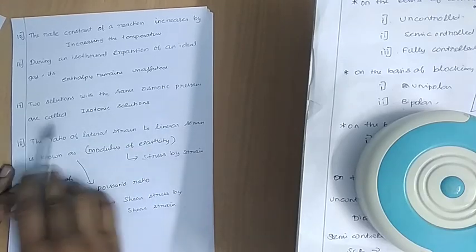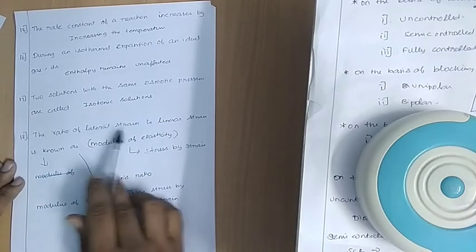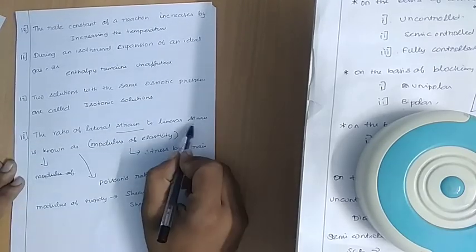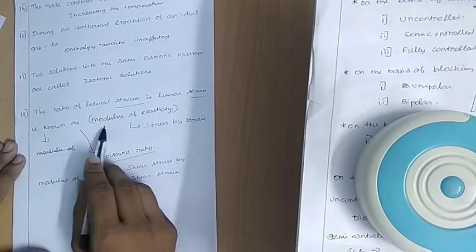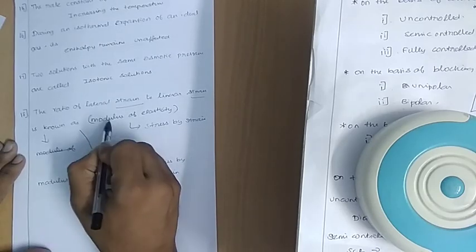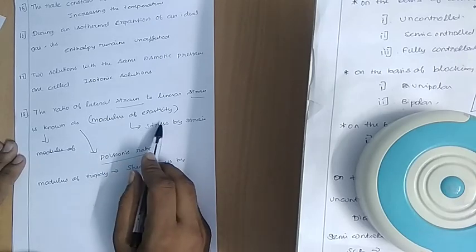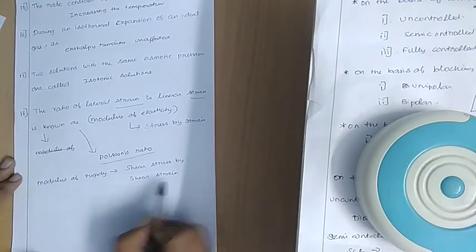The ratio of lateral strain to longitudinal strain is called Poisson's ratio. Modulus of elasticity is defined as stress to strain. More specifically, modulus of elasticity is shear stress to shear strain.